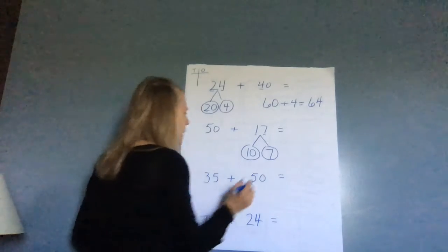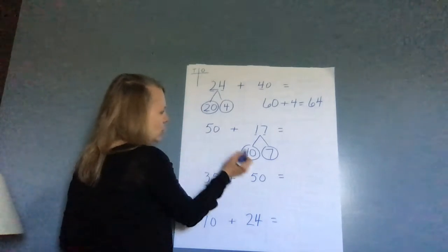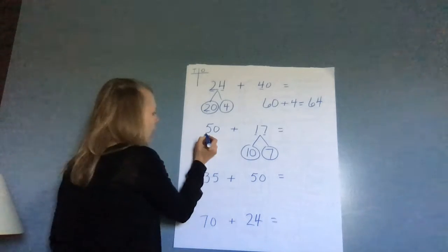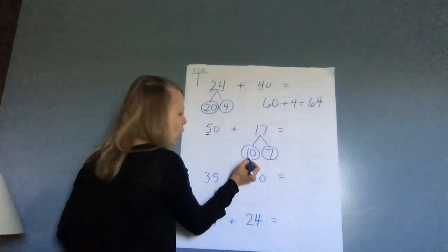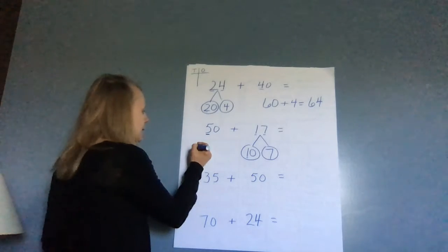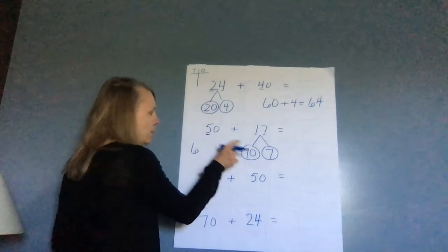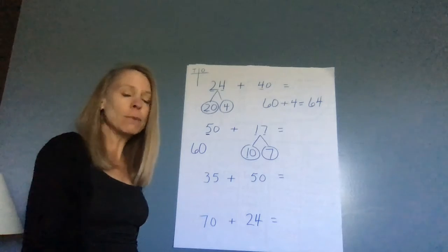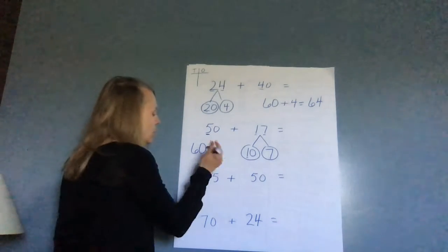So now I'm going to add together my two numbers that have a zero at the end. If I look, I have a five and a one. Well, five plus one is six. Then I'm going to put a zero at the end.